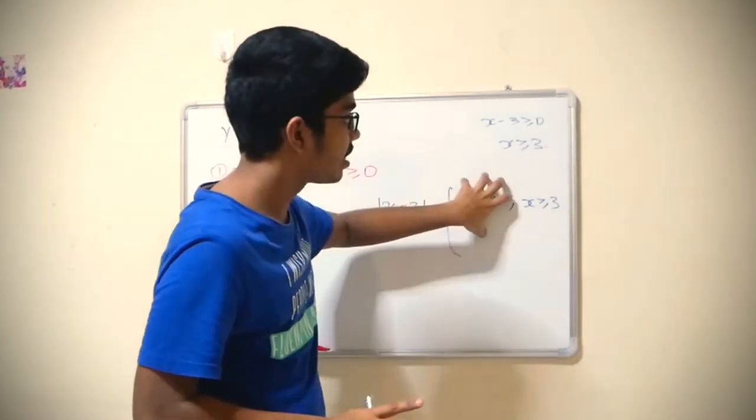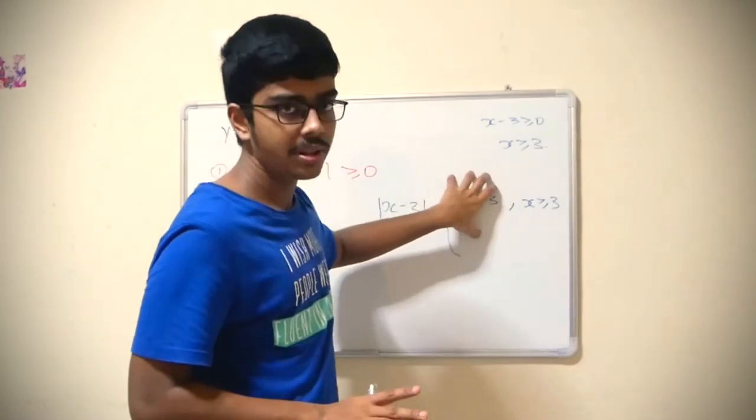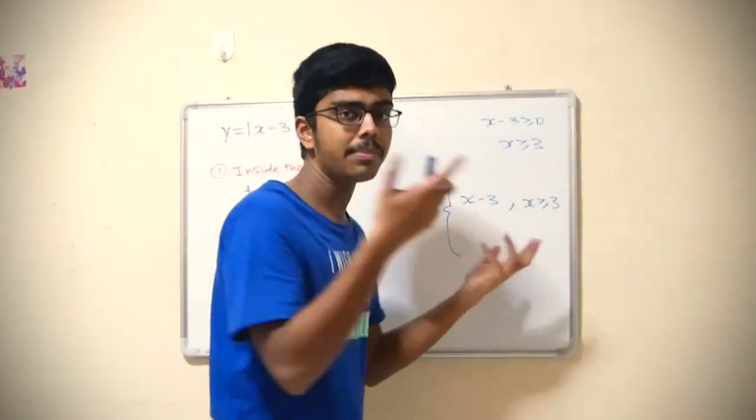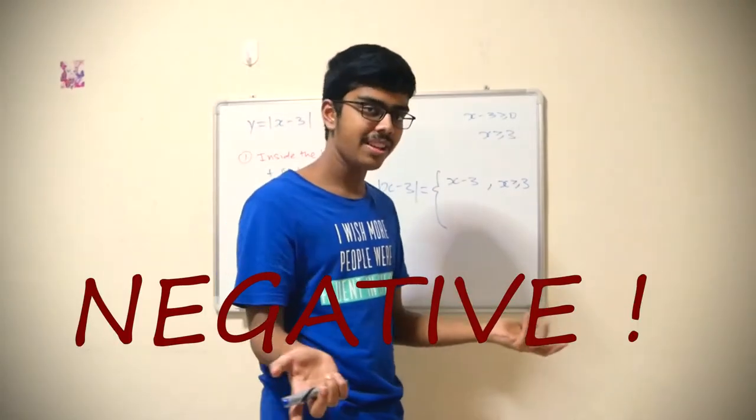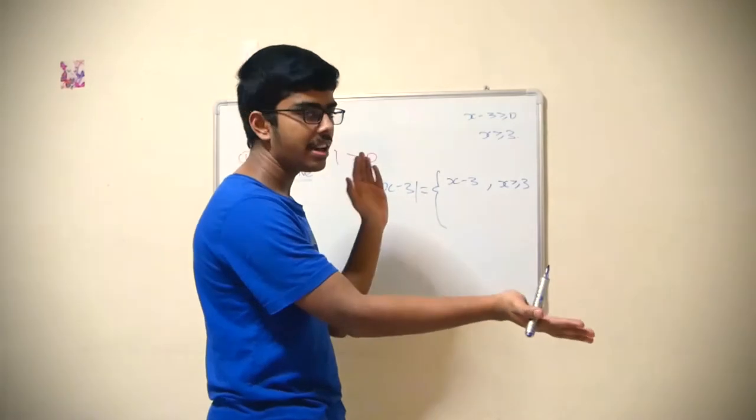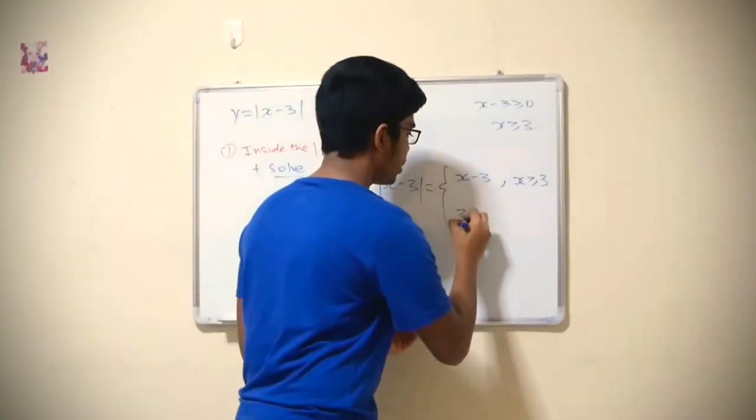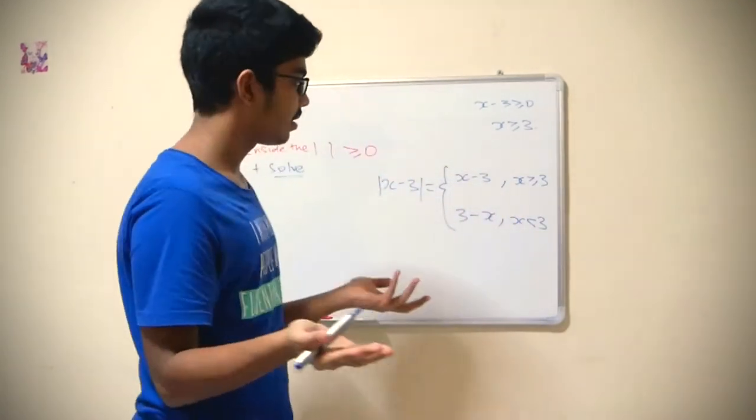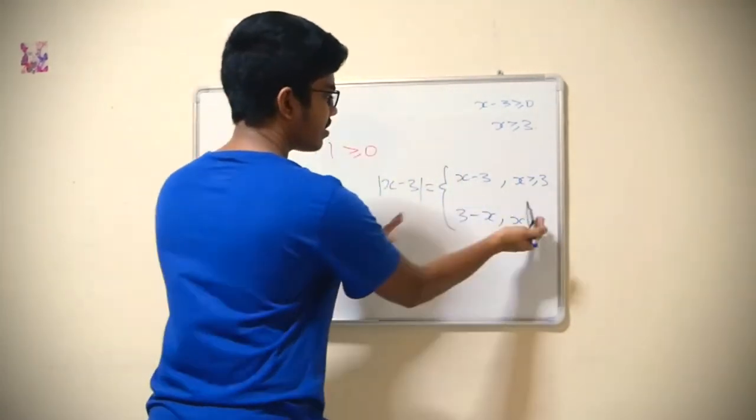However, it cannot be 2, 1, or 0 because this would then be negative. So what do you do? The easy way is just flip everything: 3 minus x when x is smaller than 3. That's it, this is the only important step.